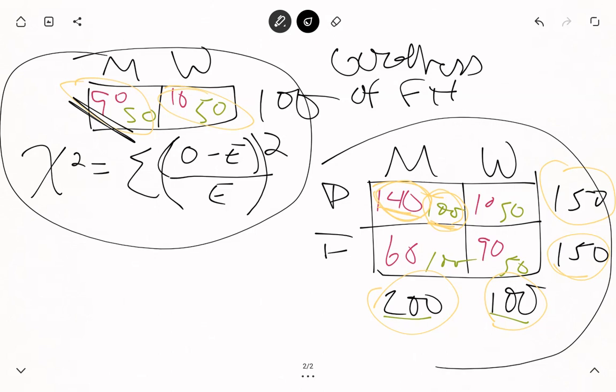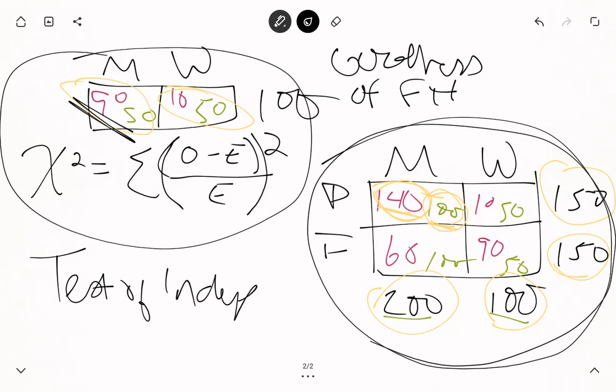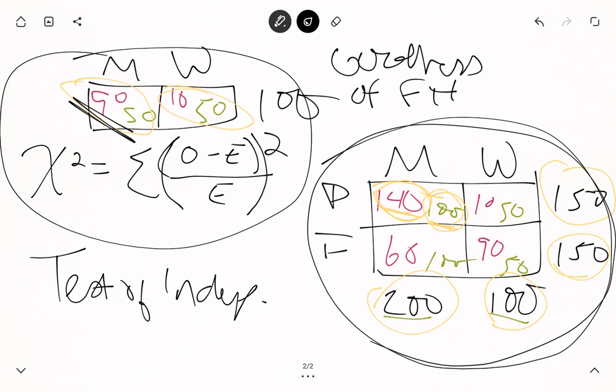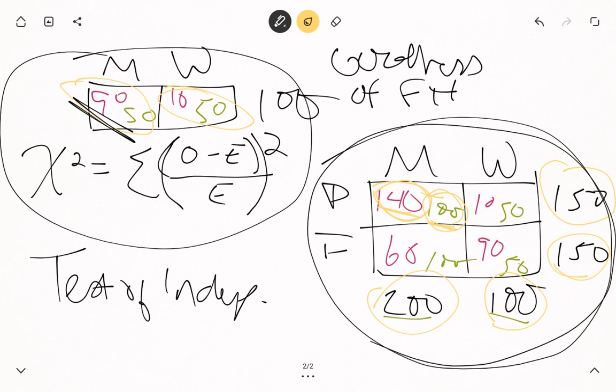This test here where we're looking at two variables together, we call this a test of independence. We're still following this idea of seeing how well the numbers fit, but what we're trying to do is really see if the pattern for women and the pattern for men was the same—so they're acting similarly—or are they acting independently, so men seem to have their own pattern and women have their own pattern. When you're looking at two variables, you're doing a test for independence. When you're just looking at one variable, like in this case gender, we're doing a goodness of fit.